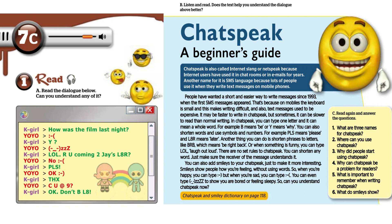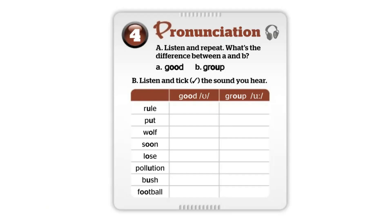You can also add smileys to your chat speak to make it more interesting. Smileys show people how you're feeling without using words. So when you're happy you can type colon-dash-close bracket :-), but when you're sad you can type colon-dash-open bracket :-(. You can even type a special sequence to show you are bored or feeling sleepy. So can you understand chat speak now?